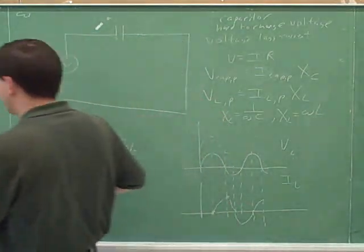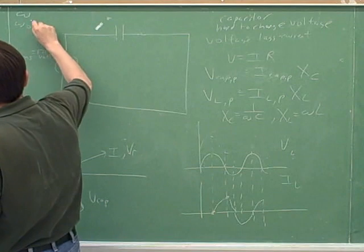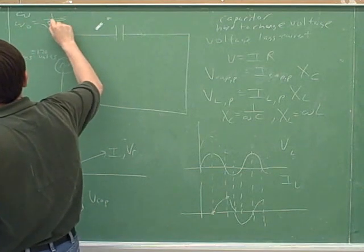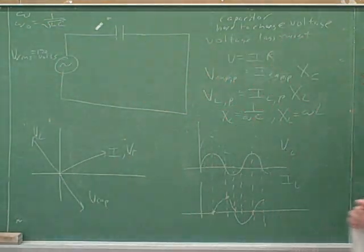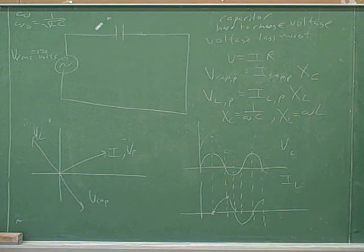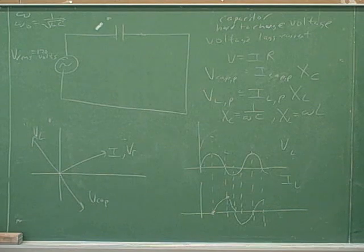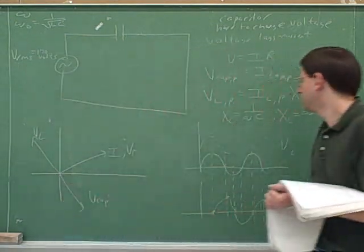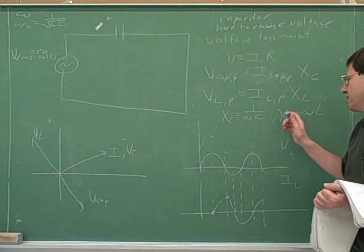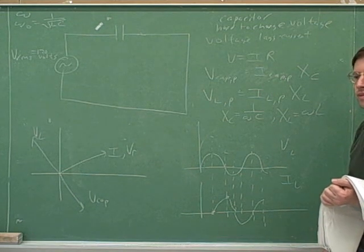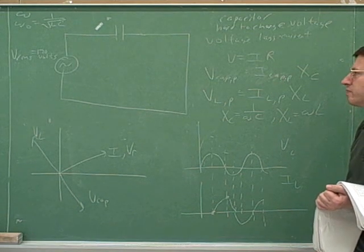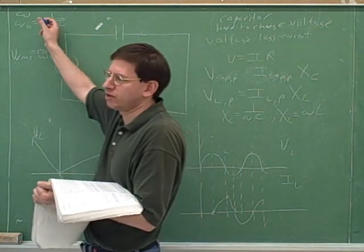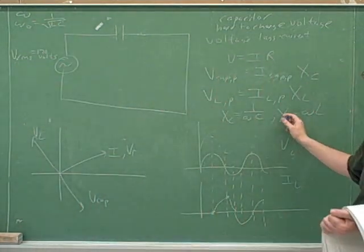Any alternating current has something called the resonant frequency. This is the equation for the resonant frequency. The significance of the resonant frequency is that when the frequency is at the resonant frequency, the reactances of the capacitor and the inductor will be equal. We could prove that when omega is equal to 1 over the square root of LC, these two reactances would be equal.